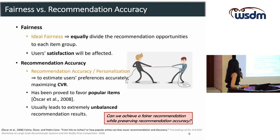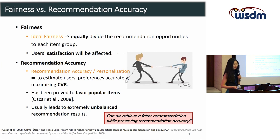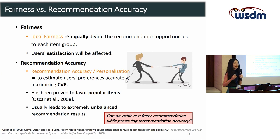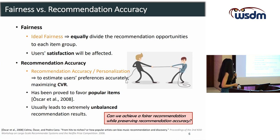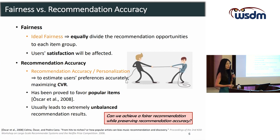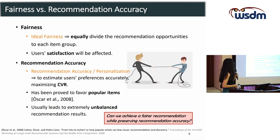The fairness concern is quite challenging because fairness and recommendation accuracy are generally conflicting goals. To achieve ideal fairness, we could simply divide recommendation opportunities equally to each demographic group, while user satisfaction will be affected as they are presented with unattractive items. The major task for recommender systems is to estimate user preferences accurately, and existing work tends to favor popular items, leading to extremely unbalanced recommendation results.